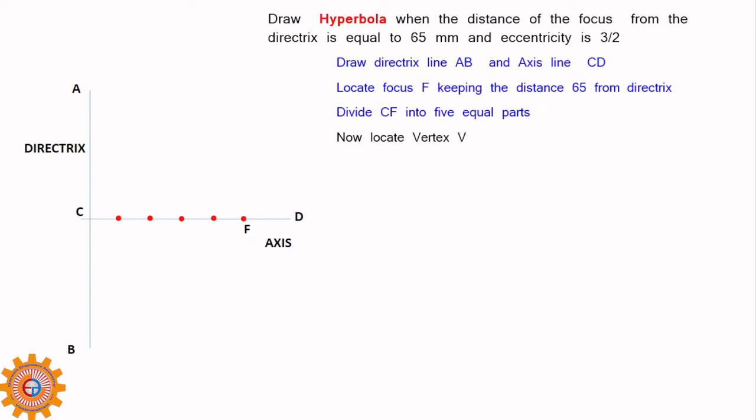Now, locate vertex V. Since the numerator is 3, you have to take from the focus 3 parts away from the focus. That is the vertex V. Draw the perpendicular line through V. You have to locate the point E keeping the distance VE is equal to VF. That is the point E.